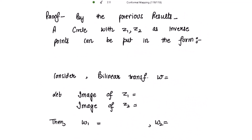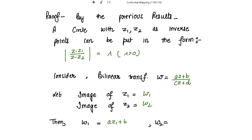For the proof: by the previous results, a circle with z1 and z2 as inverse points can be put in the form |z − z1|/|z − z2| = λ, where λ is strictly positive. Consider the bilinear transformation w = (az + b)/(cz + d), and let the image of z1 be w1 and the image of z2 be w2. Then w1 = (az1 + b)/(cz1 + d) and w2 = (az2 + b)/(cz2 + d).